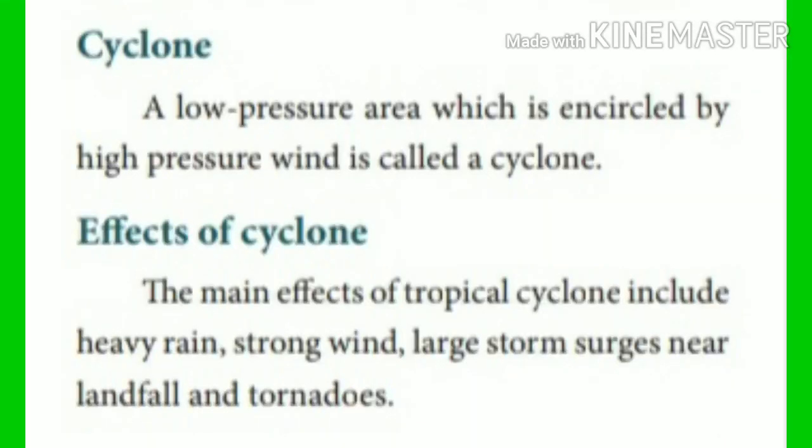The last disaster is Cyclone. A low pressure area which is encircled by high pressure wind is called a cyclone. The main effects of tropical cyclones include heavy rain, strong wind, large storm surges near landfall and tornadoes.